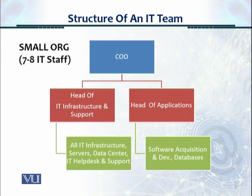In a small organization, the structure is further condensed — only about two resources would be reporting to the chief operating officer, and there is not even an IT head. There is a head of IT infrastructure and support, who looks after all the IT infrastructure, servers, data center, IT help desk, and support functions. The software function is looked after by a head of applications, who looks after all development, software acquisition, databases, and has software developers under them.